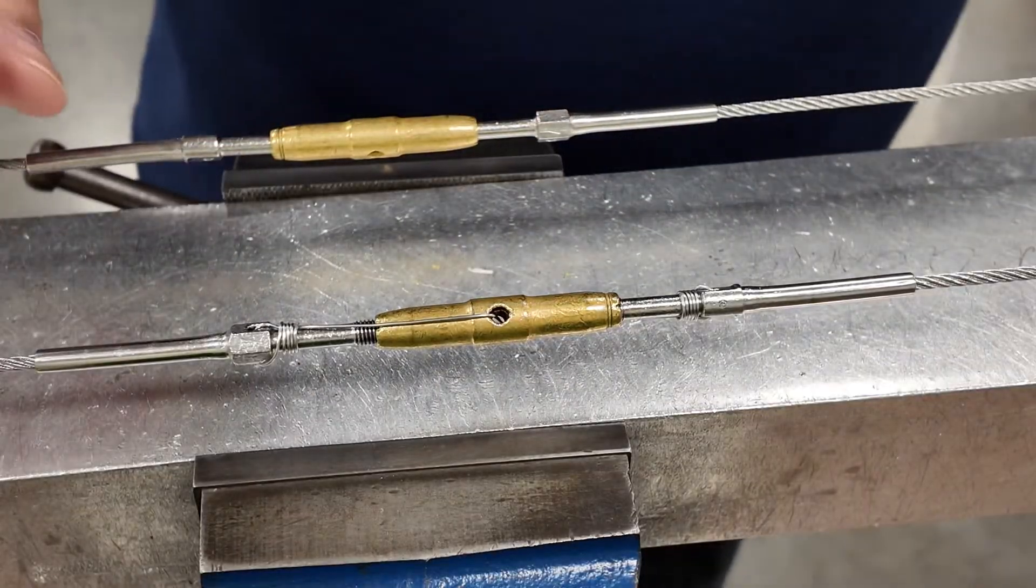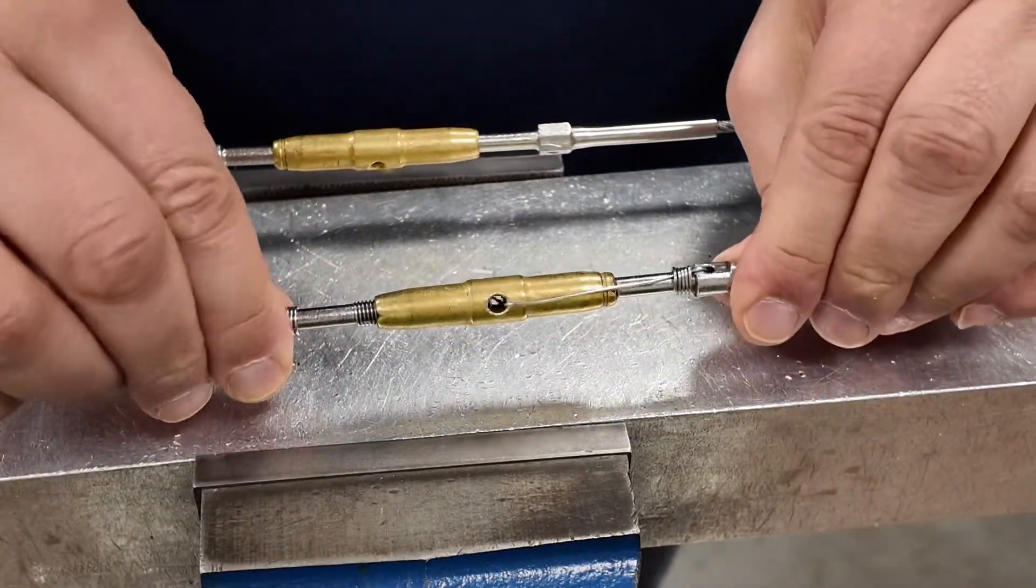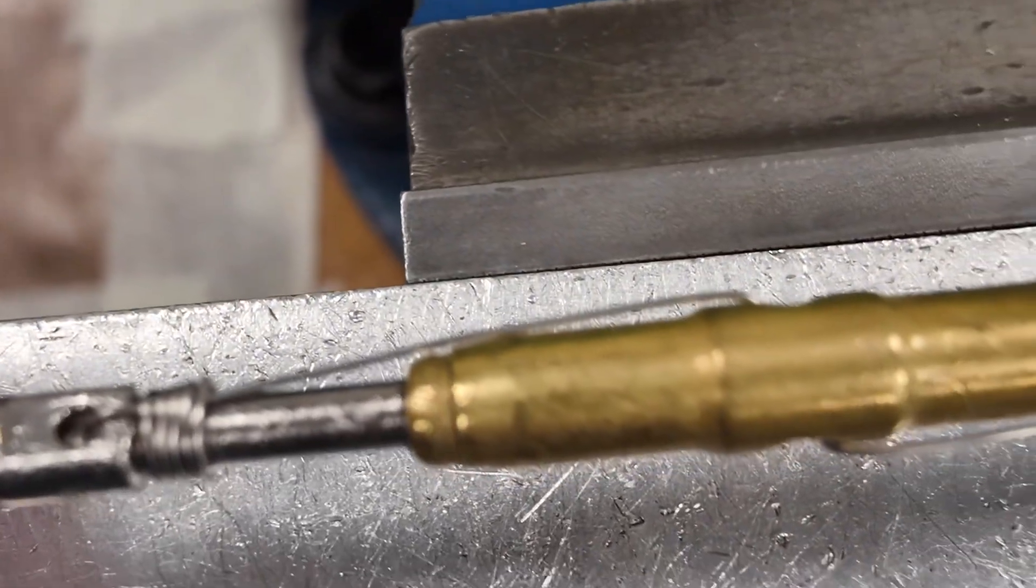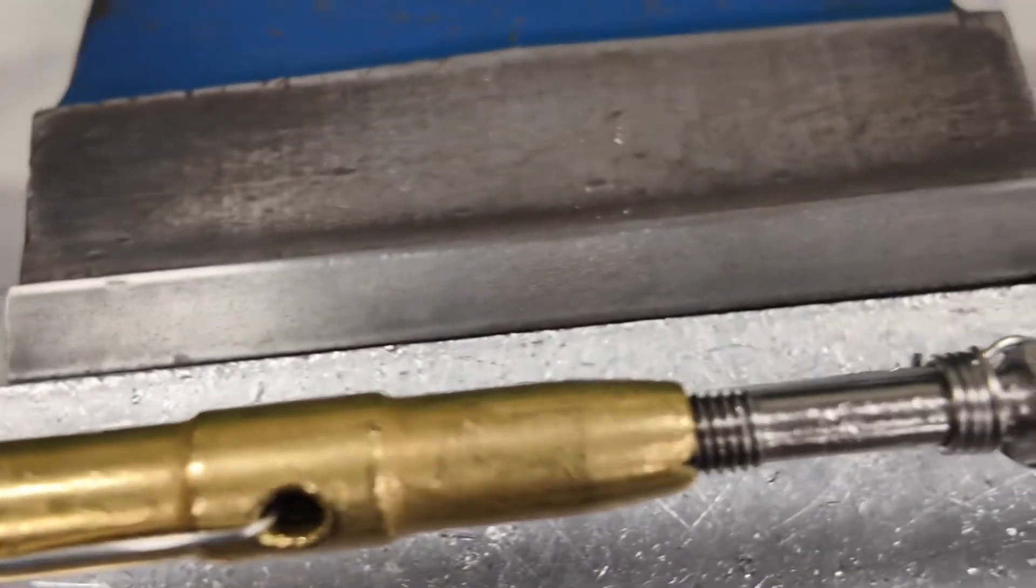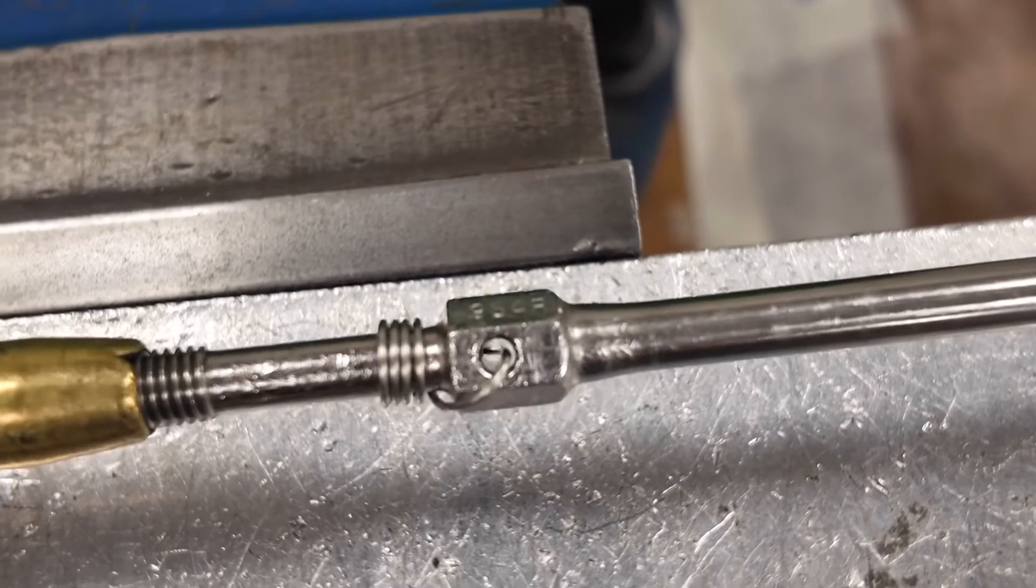No kinks, a minimum of four wraps. And nice and tight, single wrap turnbuckle lock wire safety method using 32 thou stainless steel lock wire.